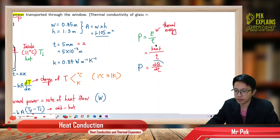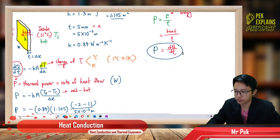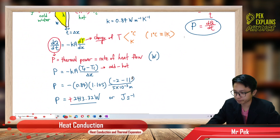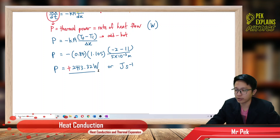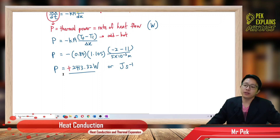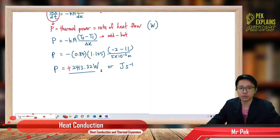P is dQ/dt. Power is rate of heat flow. The unit is watt. I hope you understand. Let's proceed to question three.